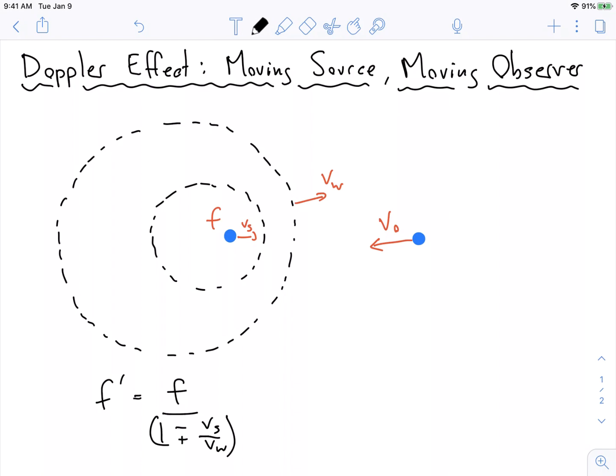Now there's a whole other effect where this observer is now moving and crashing into these shrunken wavelengths. Or if it's moving away, it's running away from these shrunken wavelengths. So what is the frequency that it hears?